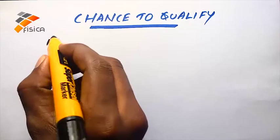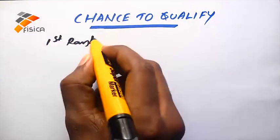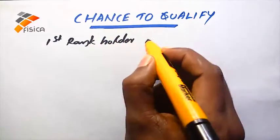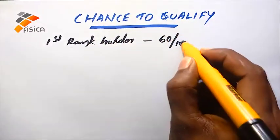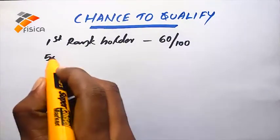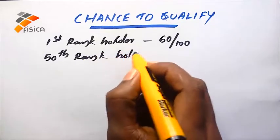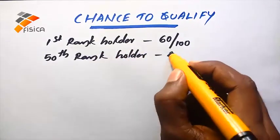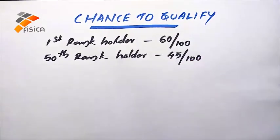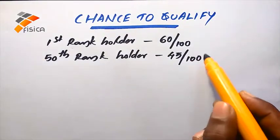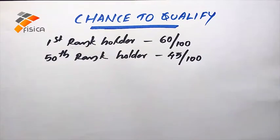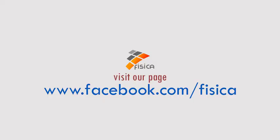In the last HSST Physics exam, the first rank holder secured 60 marks out of 100, and the 50th rank holder secured 45 marks out of 100. So if you can secure 45 marks, your name will be in the first 50 of the rank list. Start your preparation now, and if you need any assistance, please join with us.